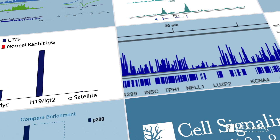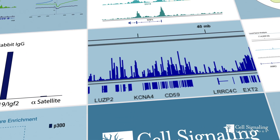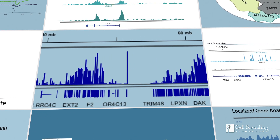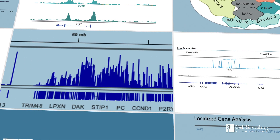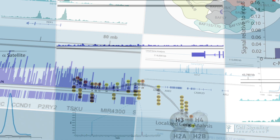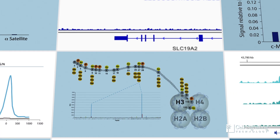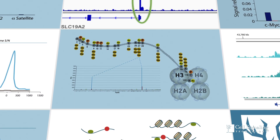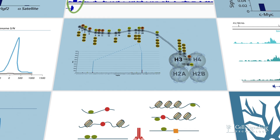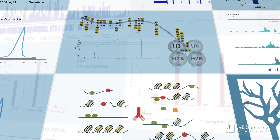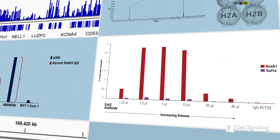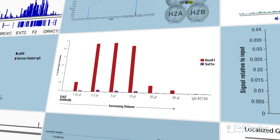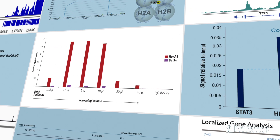No single assay is sufficient to guarantee antibody specificity and performance in your workflow. Every time you bring an antibody into a ChIP-qPCR or ChIP-seq experiment, look for validation data performed in the assay you will be using. Cell Signaling Technology antibodies are validated using multiple assays and strategies to give you confidence in the reliability and reproducibility of your data.